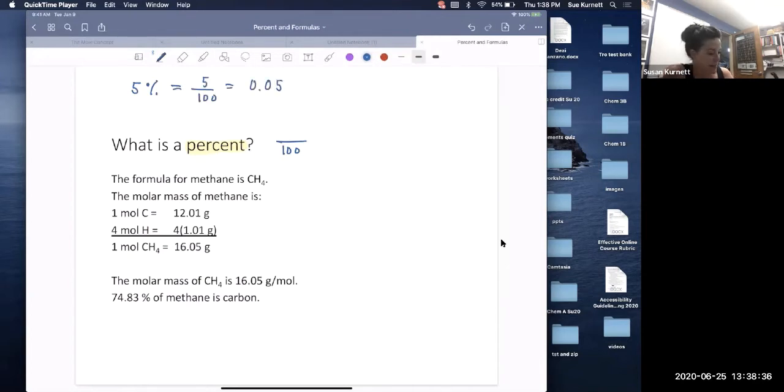So here I'm going to put some pieces together. The formula for methane is CH4. Methane is natural gas that we use in the lab. Cows make methane. Cows have four legs, CH4. And the molar mass is a carbon and four hydrogen. So here's the molar mass.